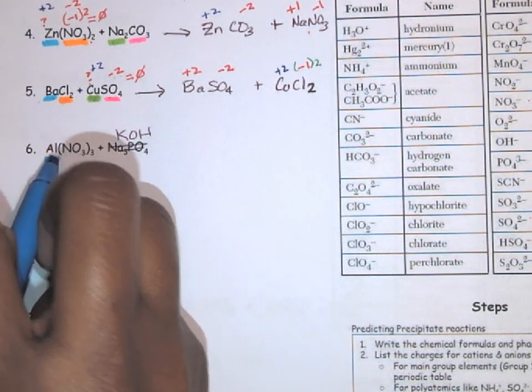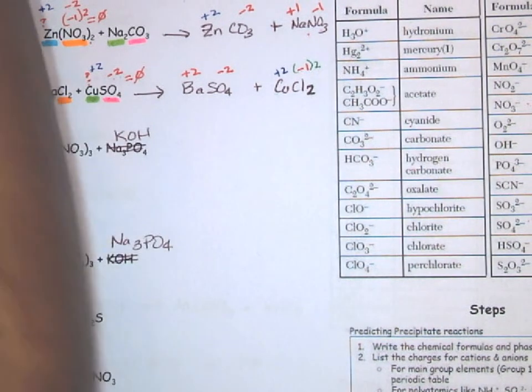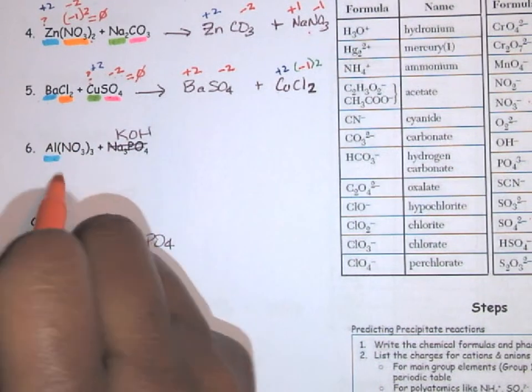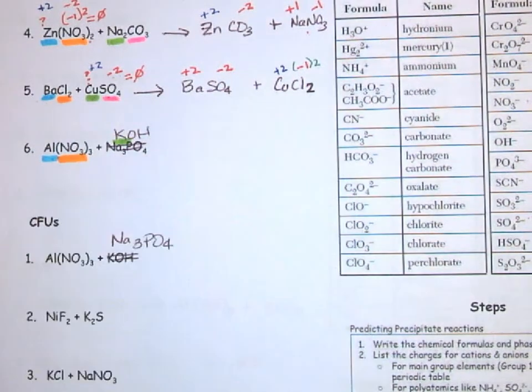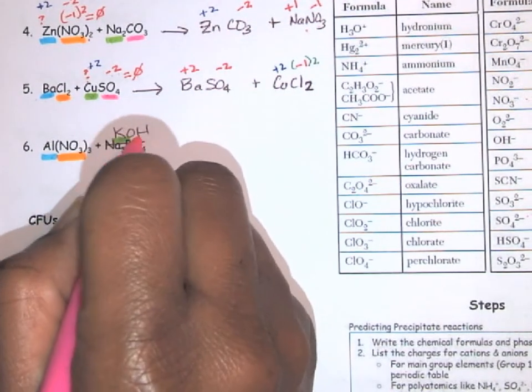So first up is always the same. We're going to divide this up into our cations and anions. That just helps me keep track when I go to switch to form my products.